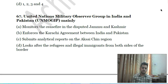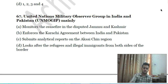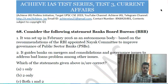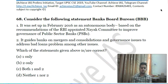Sixty-sixth question: the United Nations Military Observer Group in India and Pakistan (UNMOGIP) mainly: A) monitors the ceasefire in the disputed Jammu and Kashmir; B) enforces the Karachi Agreement between India and Pakistan; C) submits analytical reports of the region; D) looks after refugees and illegal immigrants from both sides of the border.